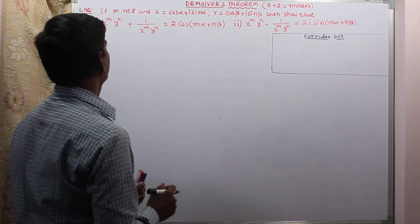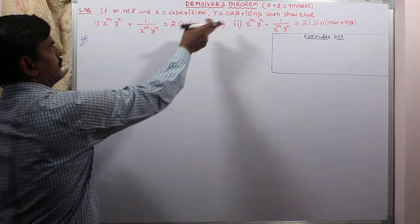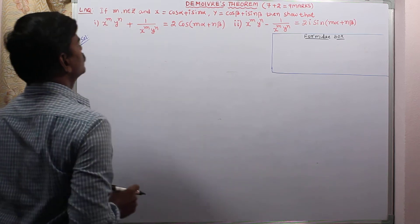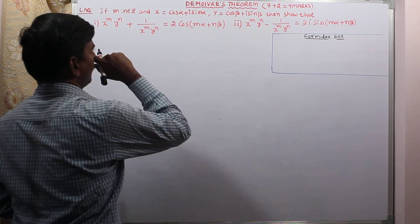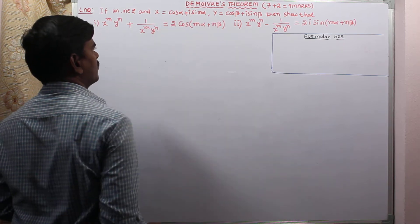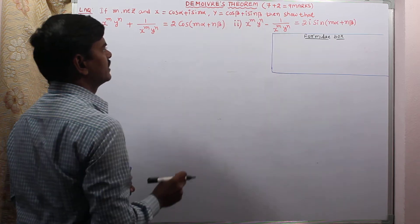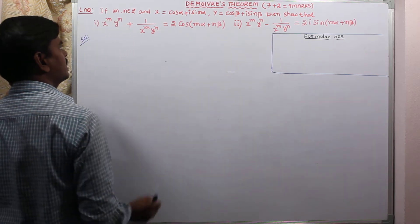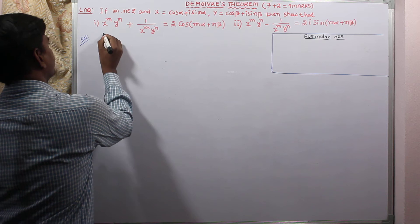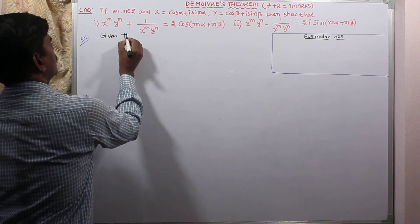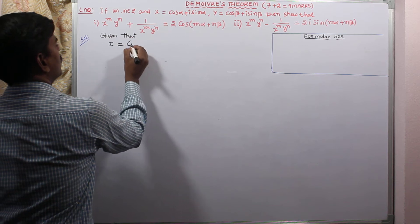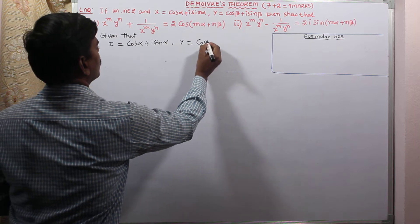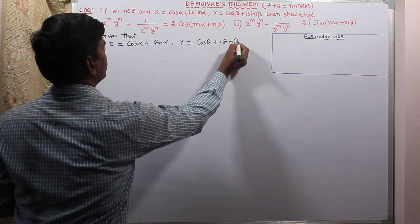Hello students, in this video we are going to learn one of the long answer questions from De Moivre's theorem chapter. The question states: m, n belong to Z (any integers). x is given as cos α + i sin α, y is given as cos β + i sin β. We have to show two results. Given data: x = cos α + i sin α, y = cos β + i sin β.